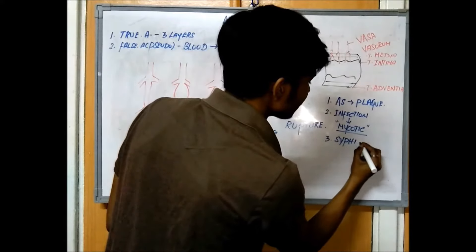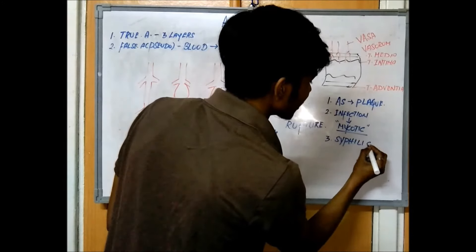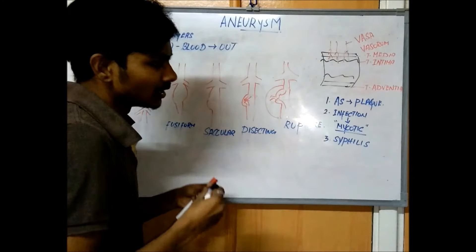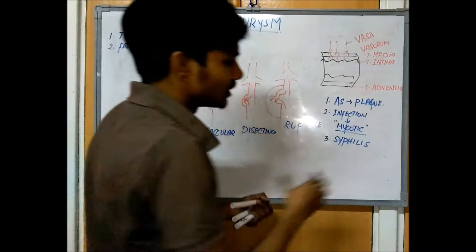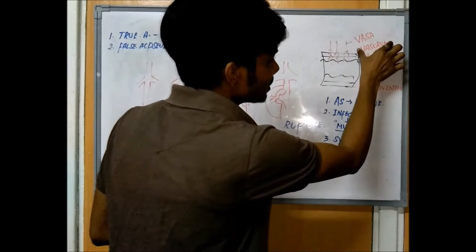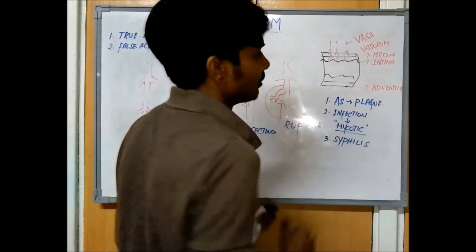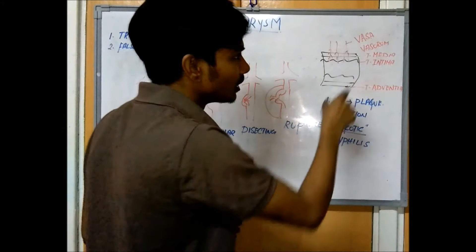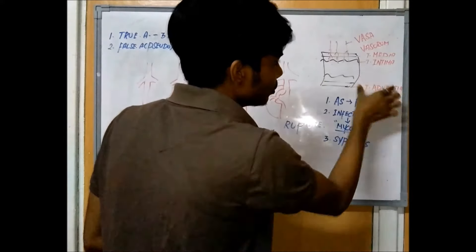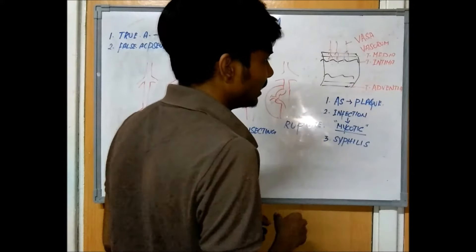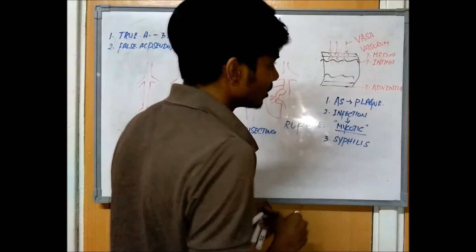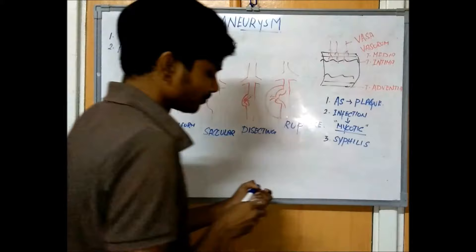The third cause is syphilis. In syphilis, the infection directly attacks the vasa vasorum, which leads to less blood flow to the three arterial layers and causes aneurysm.